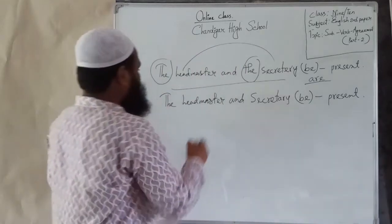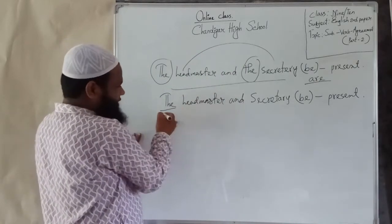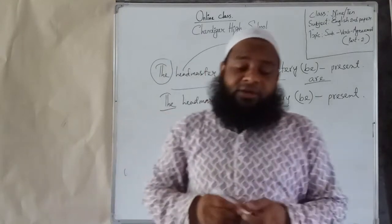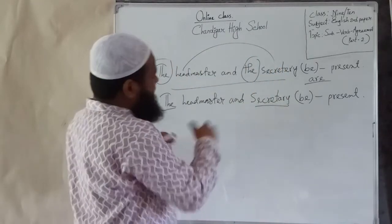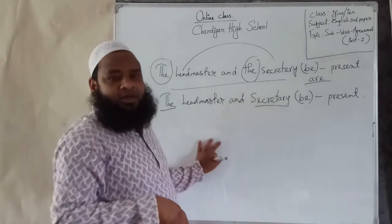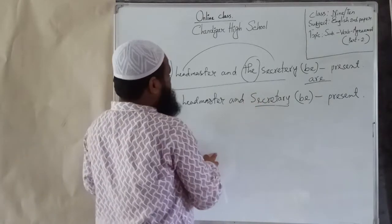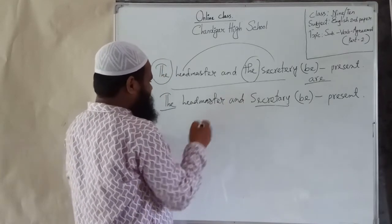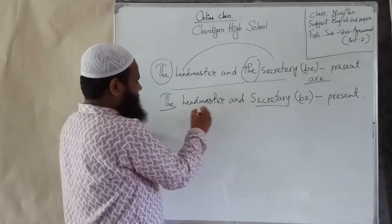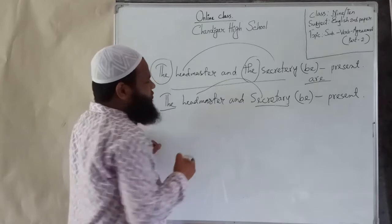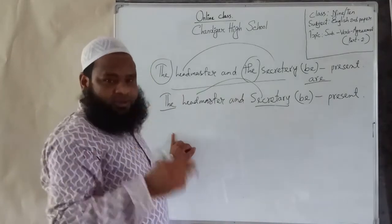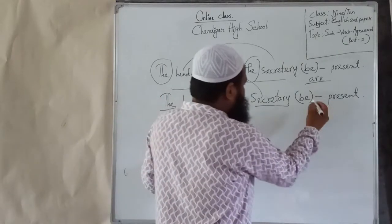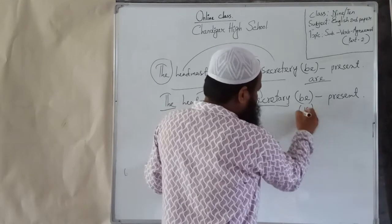Here 'the' is used before the first title, but there is no use of 'the' before the second title. 'The' has not been used before the second title. If you find this type of sentence, you will have to think that the total subject is singular. The titles are two but the person is one — one person has two titles — so it will be considered a singular subject. As the subject is singular, the verb will be 'is.'